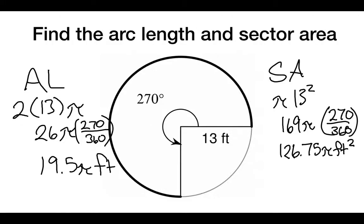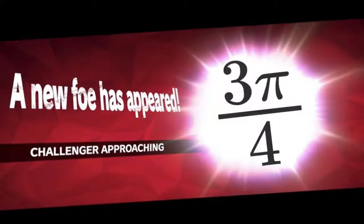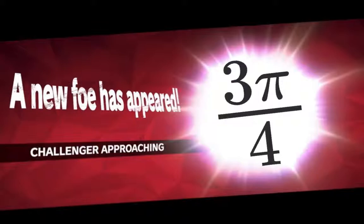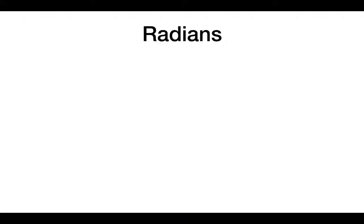And that's how we find arc length and sector area, which means I think we're done. But, oh no, a new foe has appeared. Oh, what could it be? Radians.